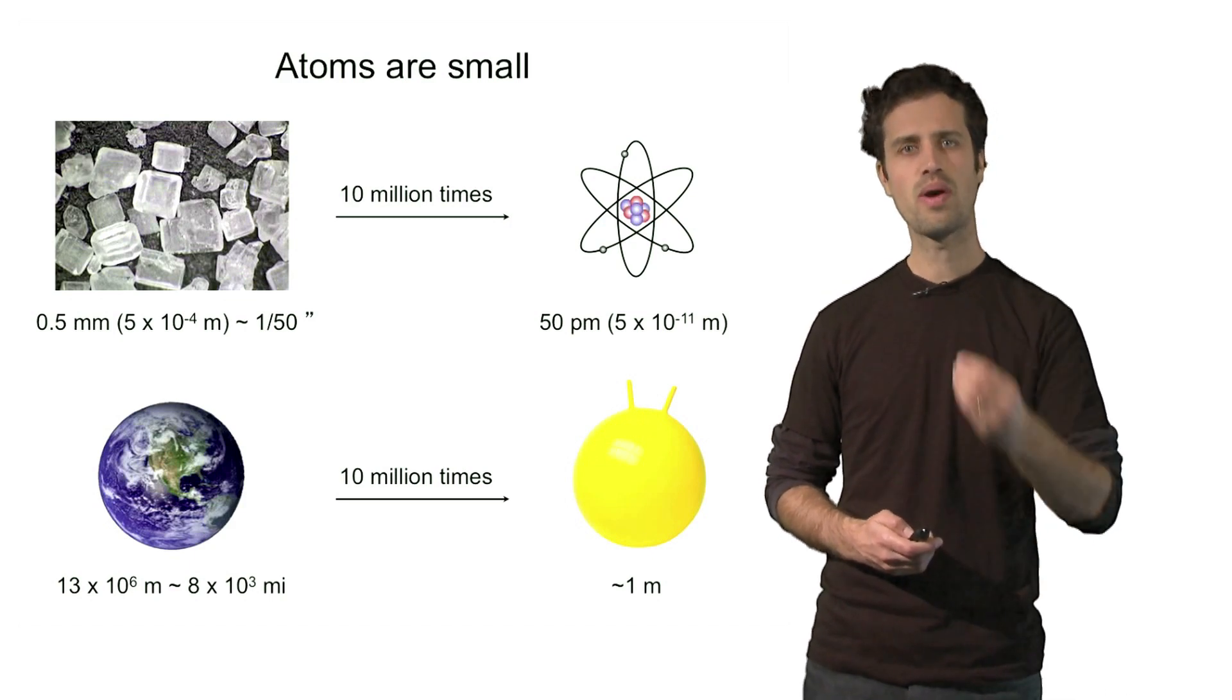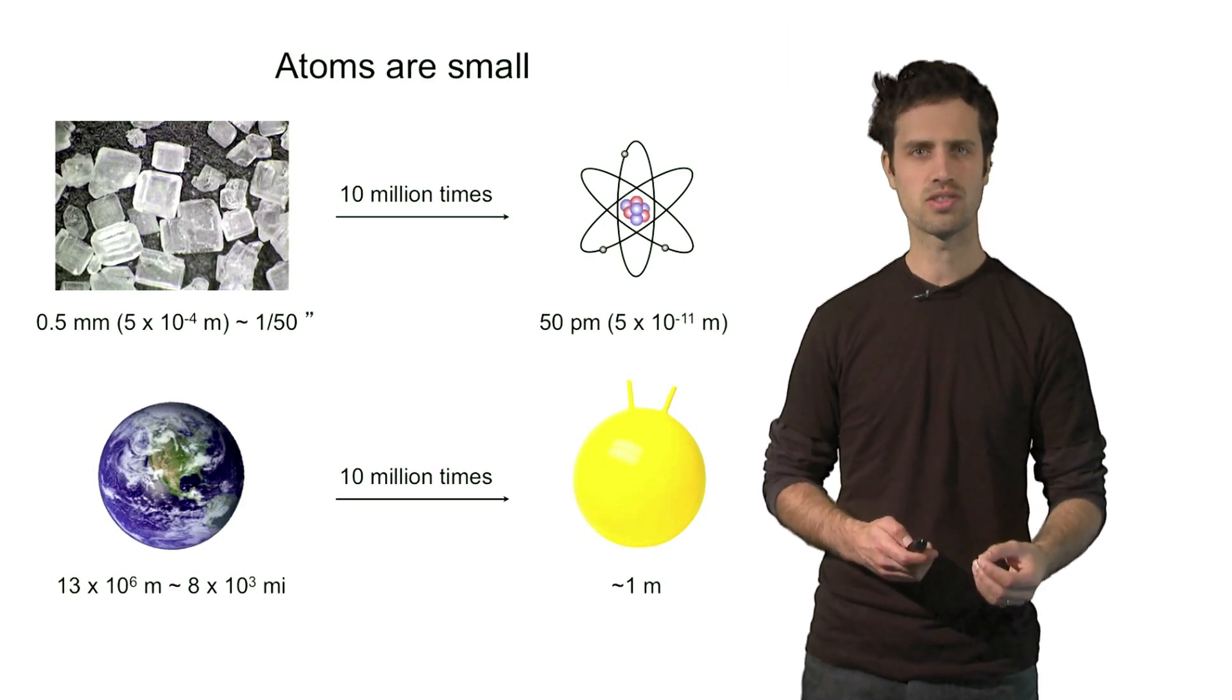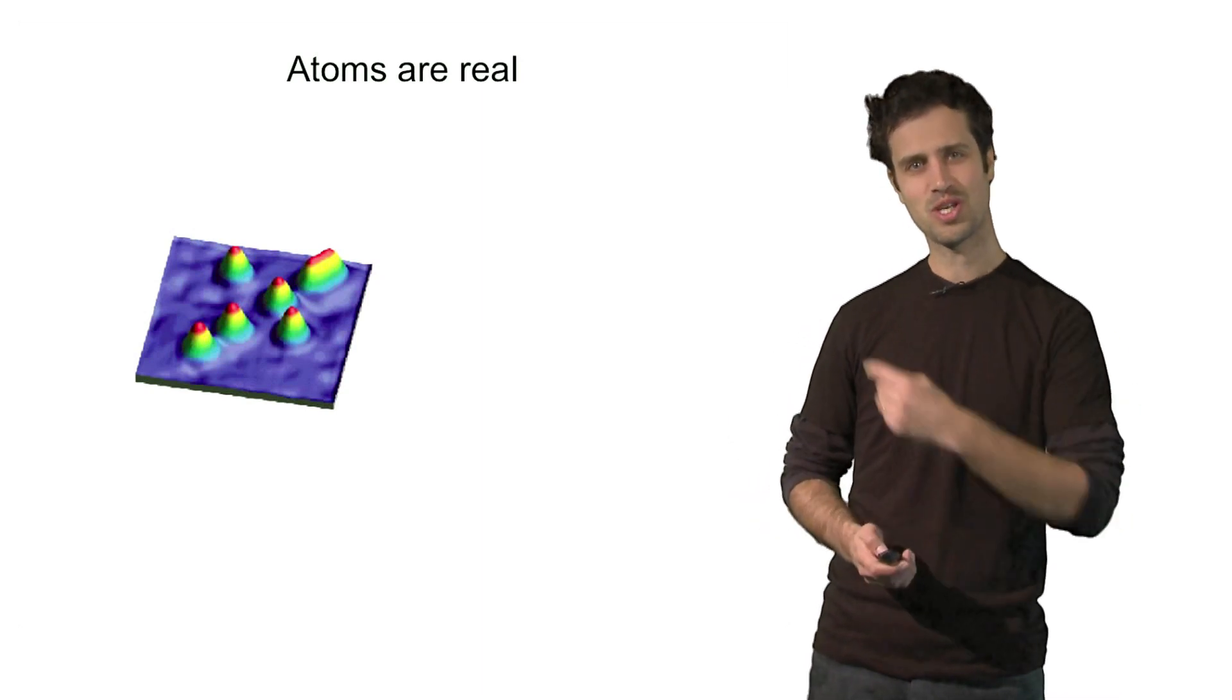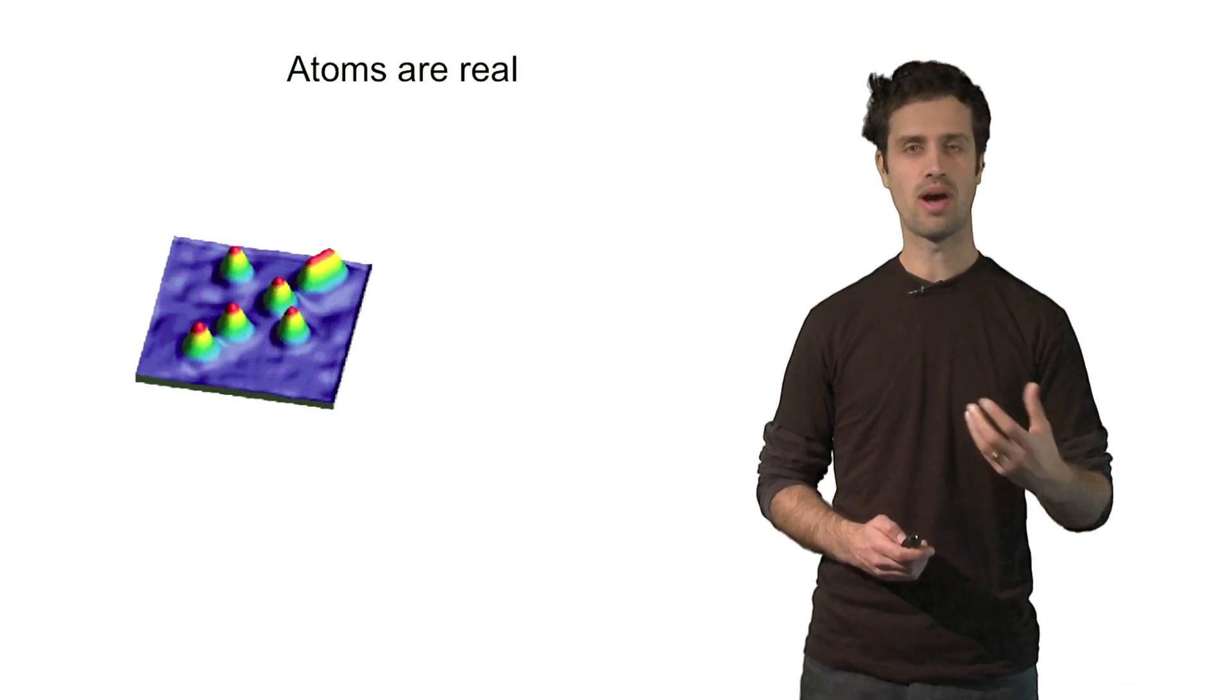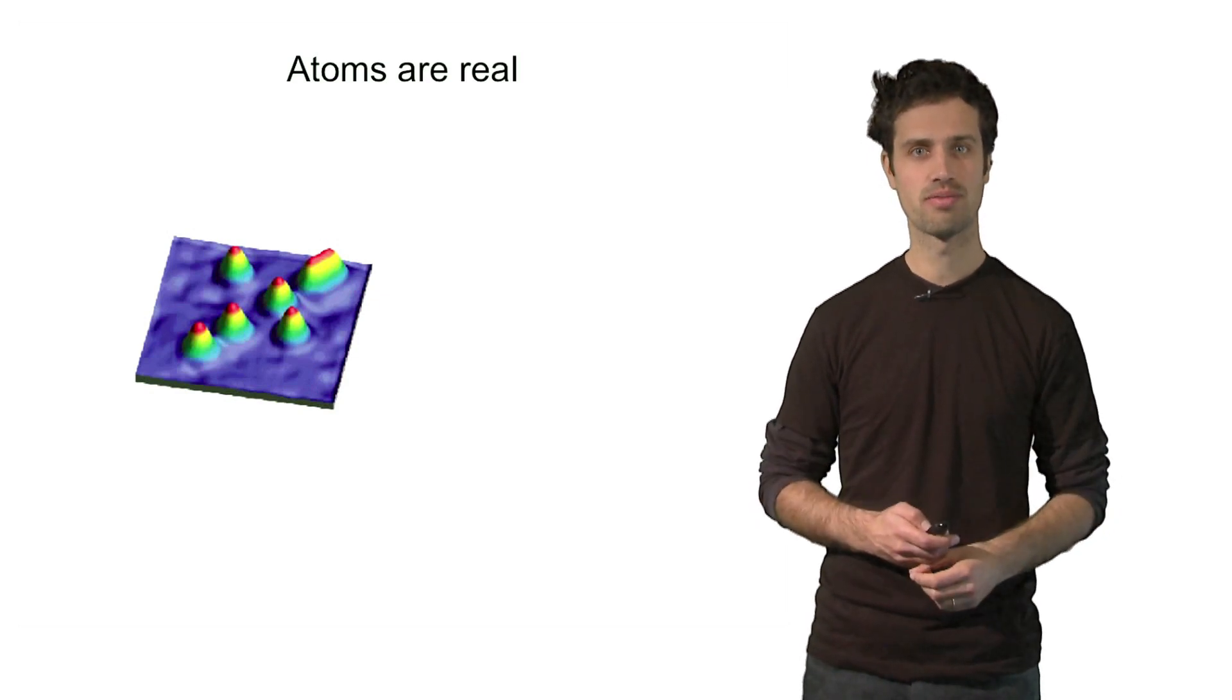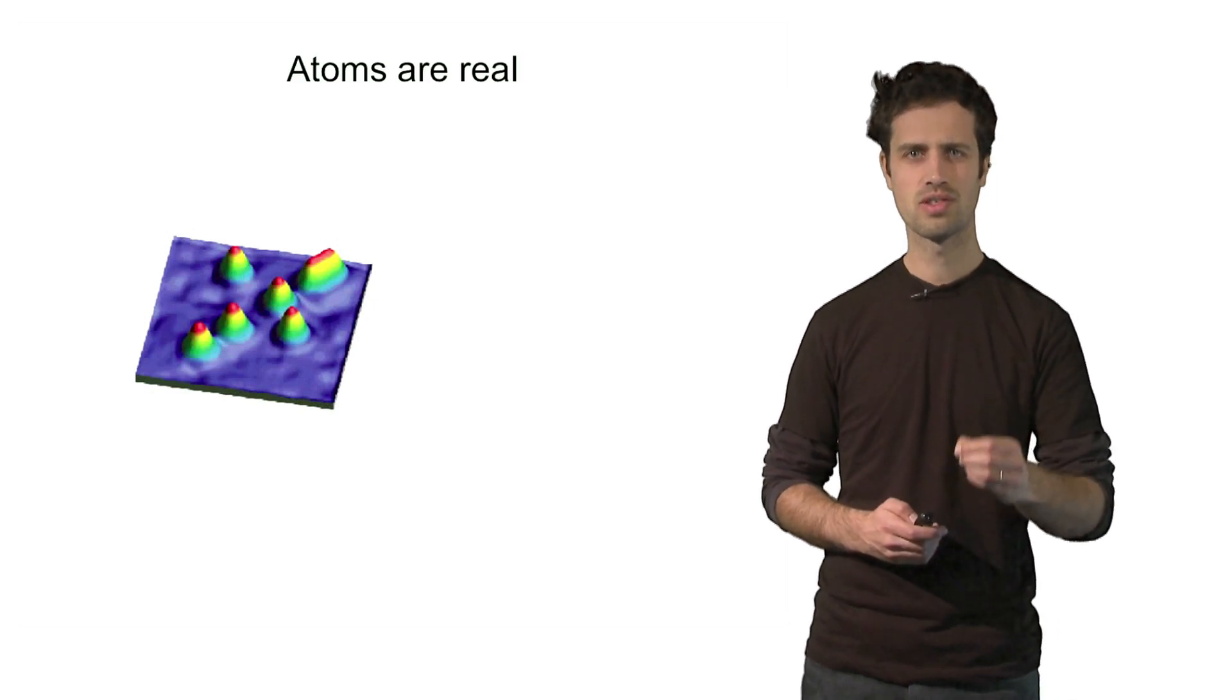So even though atoms are very small, they're not inconceivably small. They're real objects. And that is illustrated in this picture right here. Even though atoms are very, very small, and we can't see them with our eyes because the wavelength of light is actually larger than the atom itself. But there are different tools that we can use to visualize atoms.